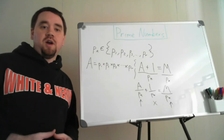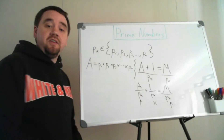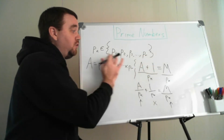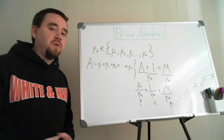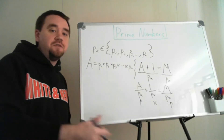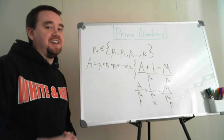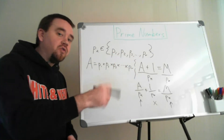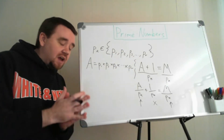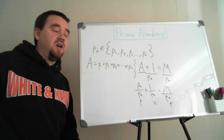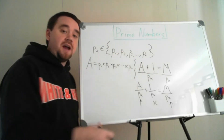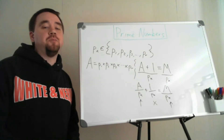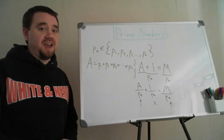So the two possibilities for m: if it's prime, it's not in the set; if it's composite, it's divisible by a prime not in the set. Either way, we've found a new prime. We can add it to the set and repeat. Since we placed no restrictions on the size of the set, we can do this ad infinitum. There is no largest prime number — the size of the prime numbers is infinite, just like the natural numbers.